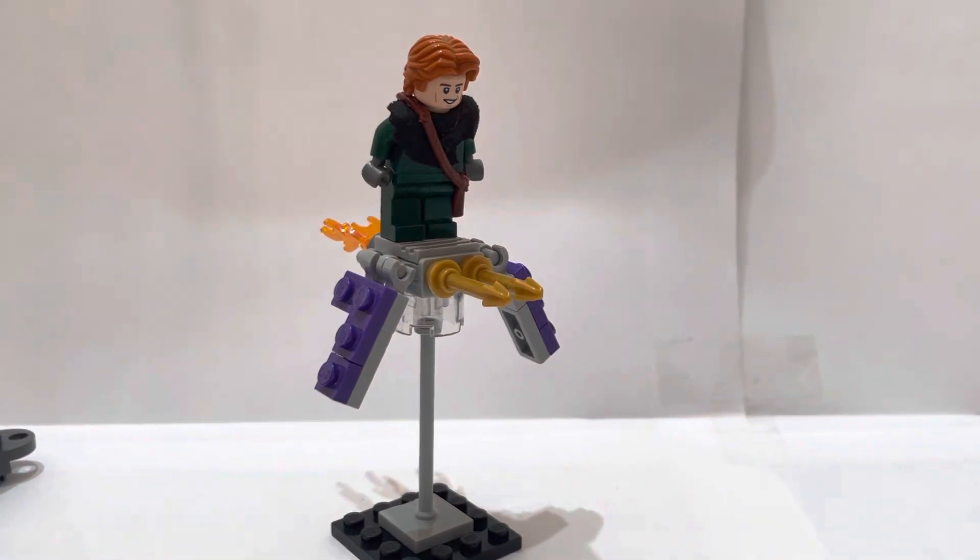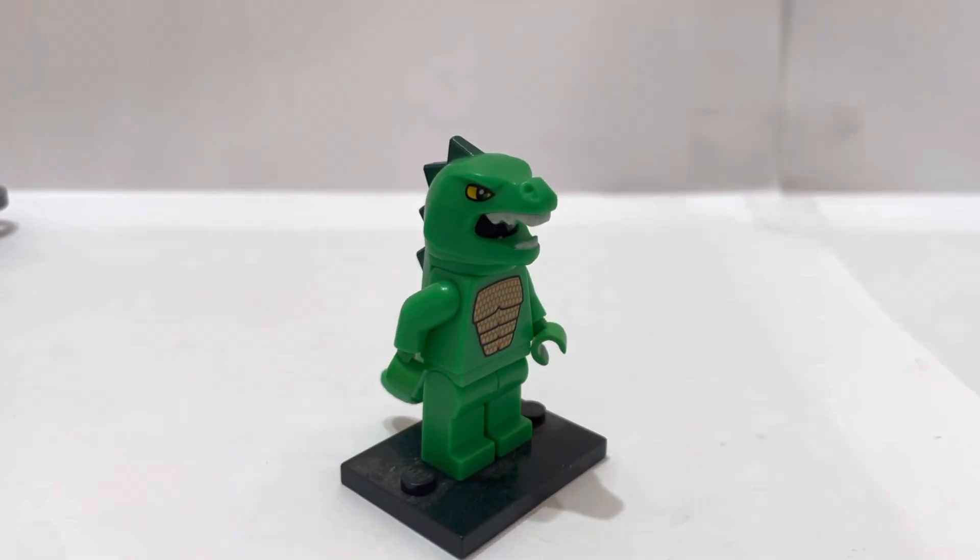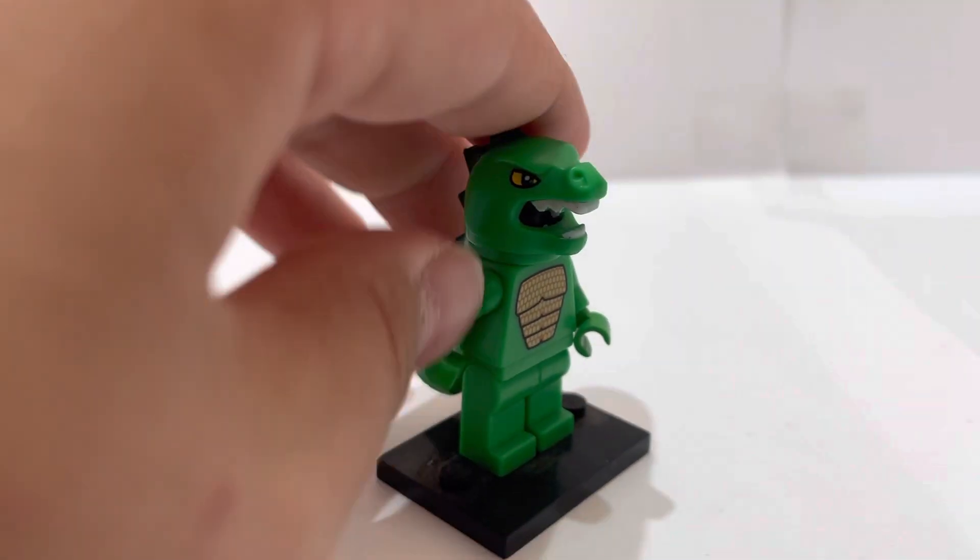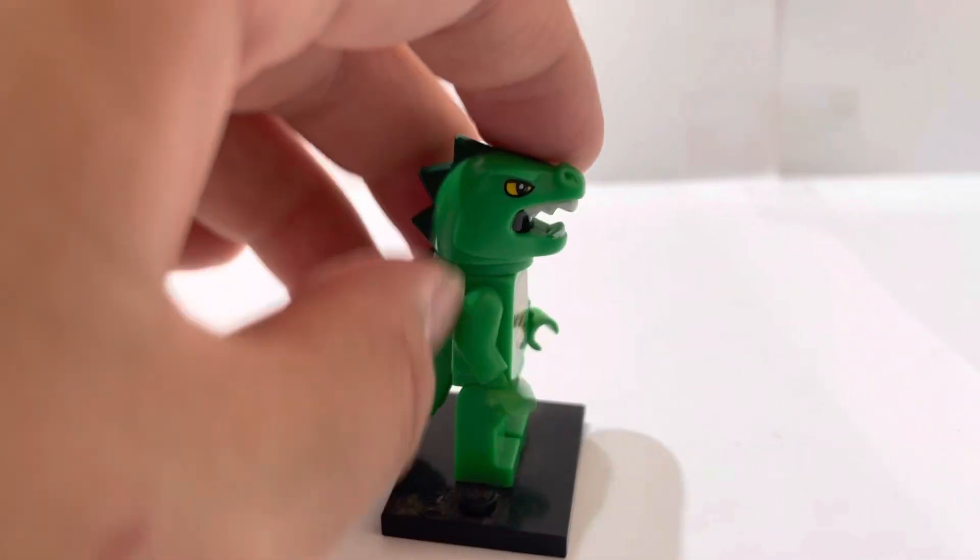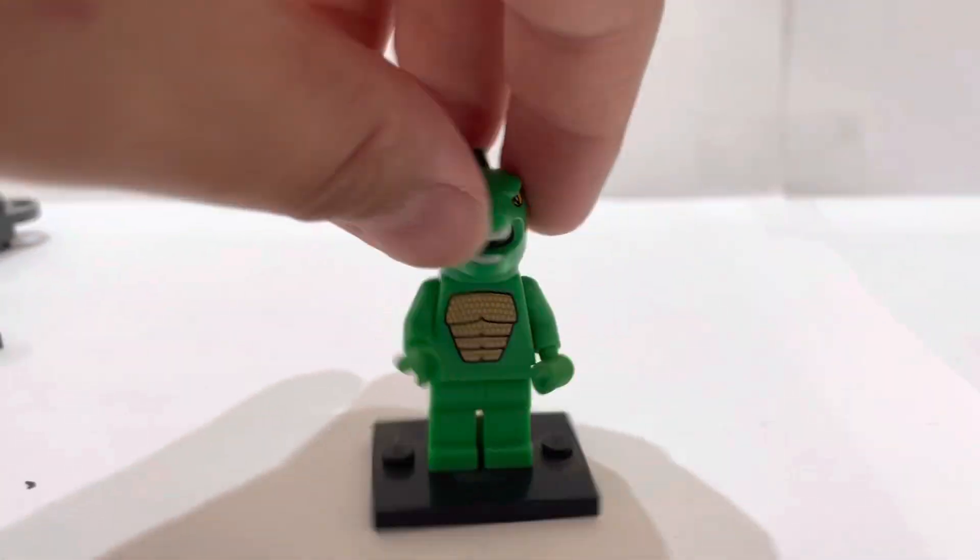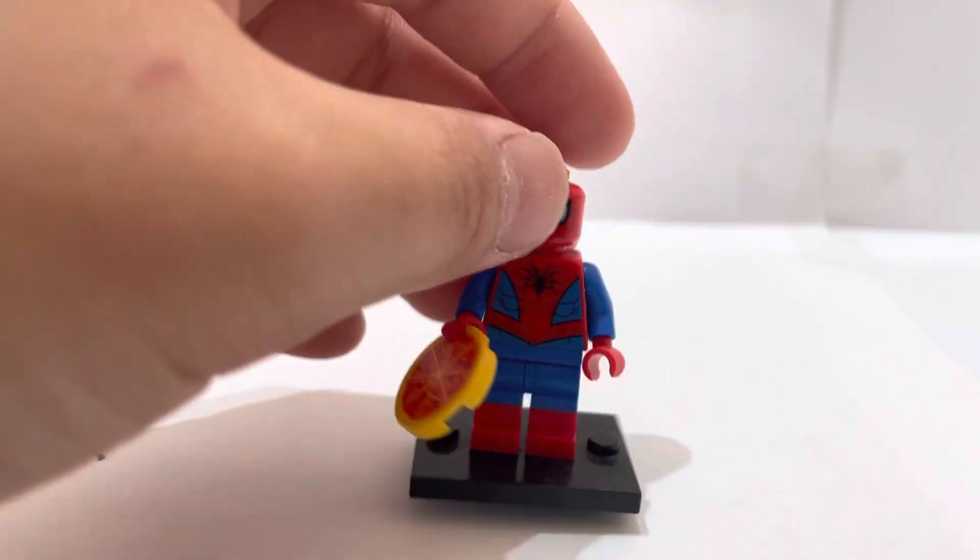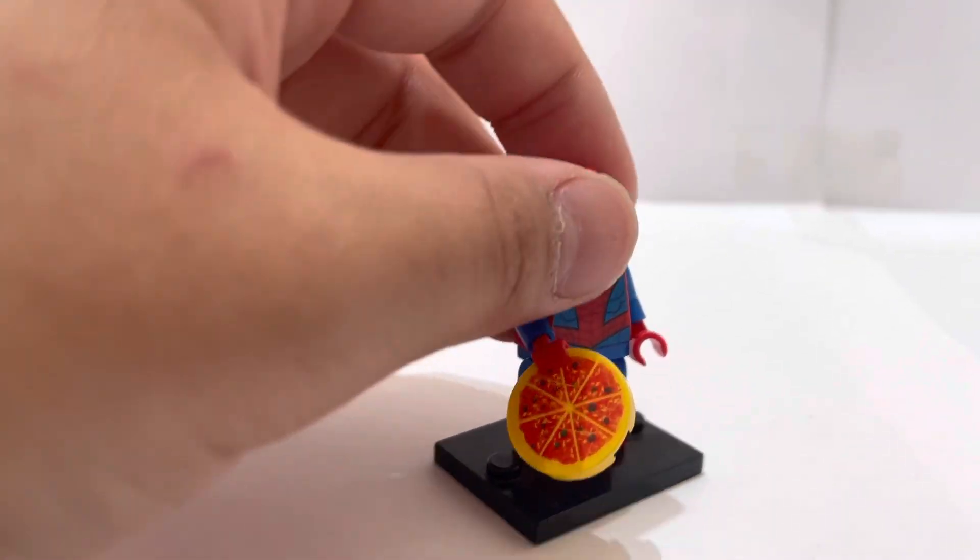The Lizard is the dinosaur CMF guy with a black head, nothing really special. This is basically the best Lizard you can get. Then Spider-Man, he's got good printing around him. He's got dual molded legs, he's not got dual molded arms, but I mean you can't get everything perfect. And he's just got pizza as an accessory.